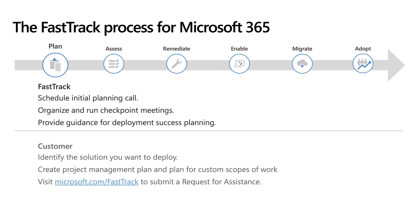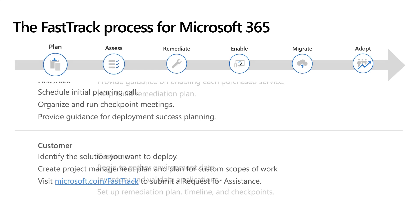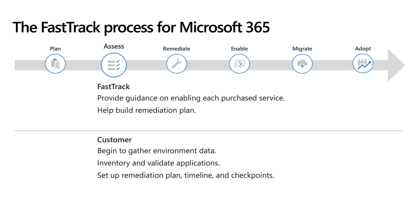During the plan phase, FastTrack will schedule an initial call and give guidance on how you can build your deployment success plan. Customers should visit Microsoft.com/FastTrack and submit a request for assistance. Customers are then responsible for identifying the solution they want to deploy and creating a project plan. In the assess phase, FastTrack provides guidance on enabling the service and provides timelines and checklists to build a remediation plan, while customers gather environment data, inventory, and validate their applications.